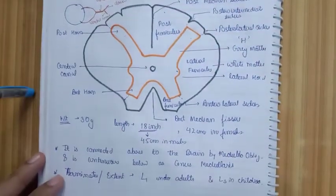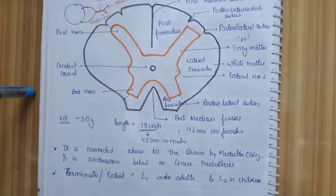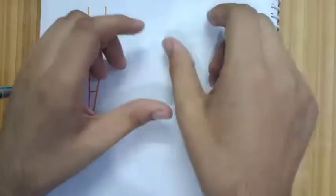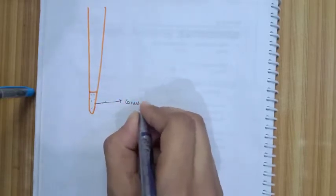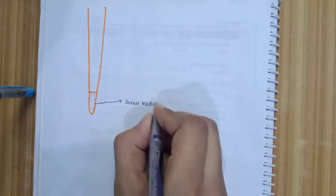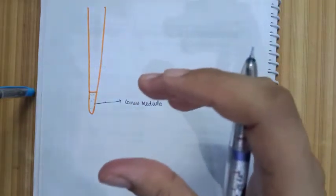Now let's talk about the meningeal covering. The meningeal covering of the spinal cord is the same as that of the central nervous system, because the meningeal covering of the CNS continues down and covers the spinal cord as well. In the lower portion of the spinal cord, we have a conical portion called the conus medullaris, which forms the lowermost part of the spinal cord.